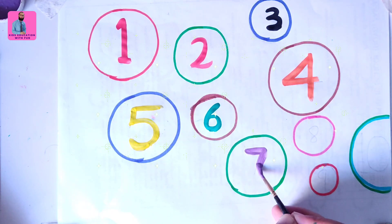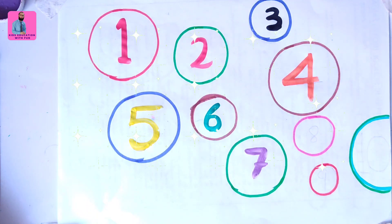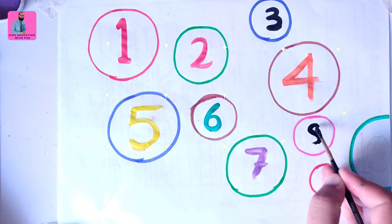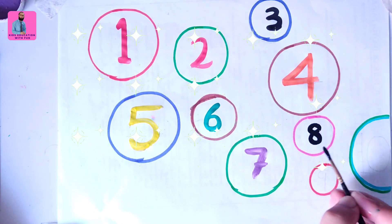This is violet color, number seven. You can use any color you have. Number seven, and the last three numbers. So which color you want to color number eight? Number eight, this is number eight.